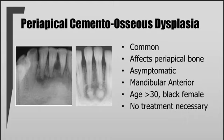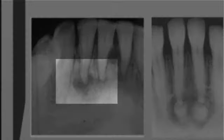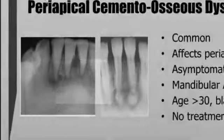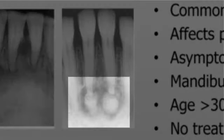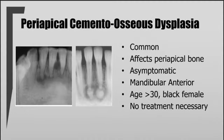Over time we would see the lesion become increasingly calcified. In the first image you can see it would be easy to mistake this for a periapical pathosis, but in the second image we see a much more advanced dysplasia. This is where pulp testing can become very helpful. If the teeth are asymptomatic and vital, there's really no need for treatment — we would just monitor these lesions over time.